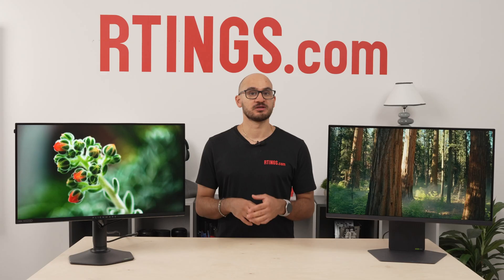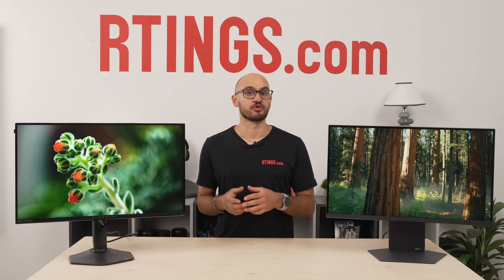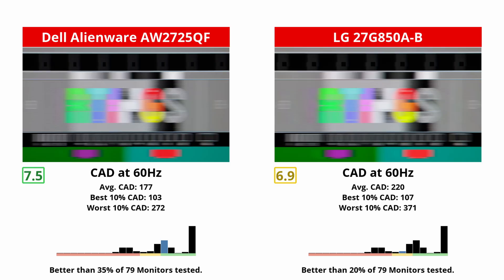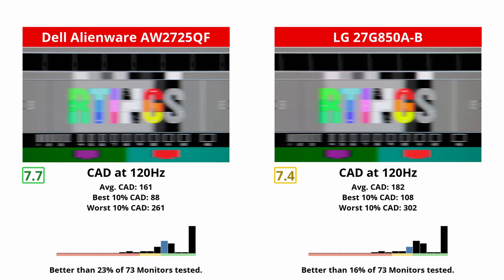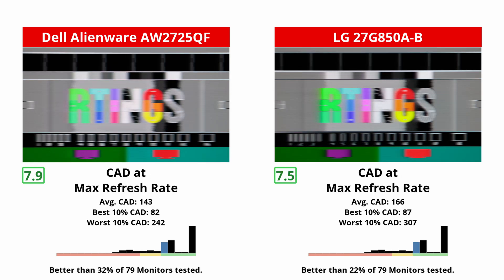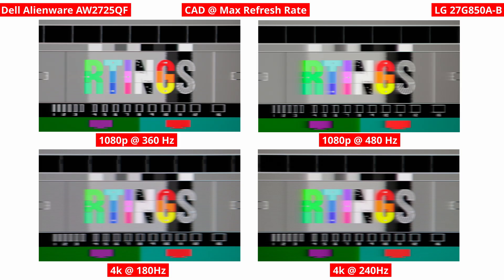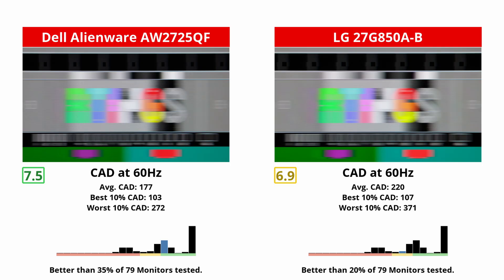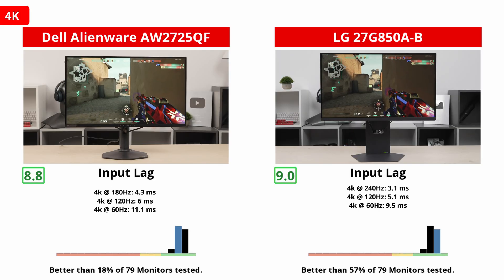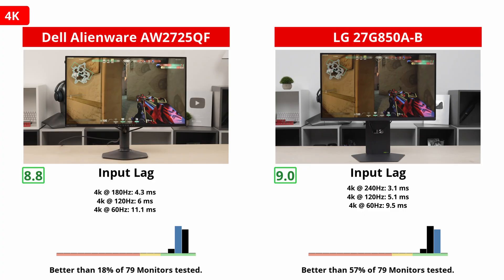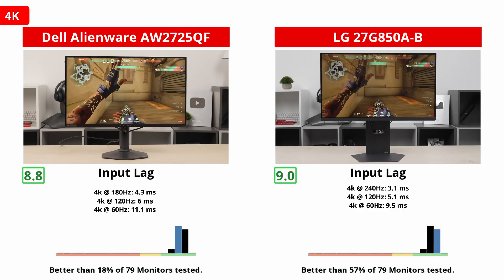What about how the two monitors perform for gaming? Even though the higher refresh rate on the LG offers a smoother feel, it actually has worse motion handling because of its slower response times. Even at 480Hz, there's some blur behind fast-moving objects, and motion looks better on the Dell at 360Hz, despite having some inverse ghosting. Overall, the Dell has the advantage in either of the dual modes at higher refresh rates, but motion looks similar on both displays at lower refresh rates. The LG has the advantage when it comes to input lag — it's slightly lower at any refresh rate, even in the dual modes.